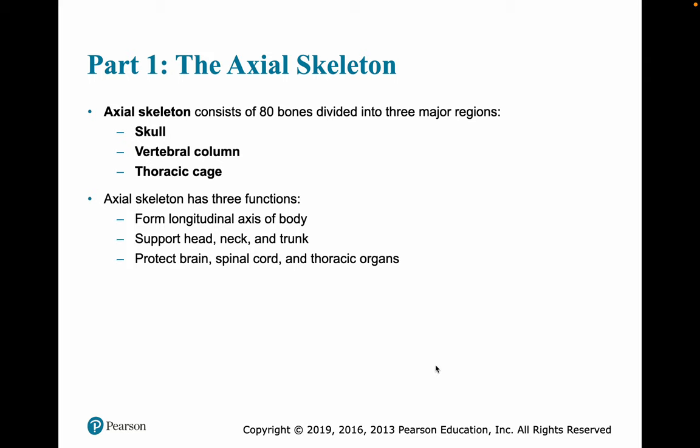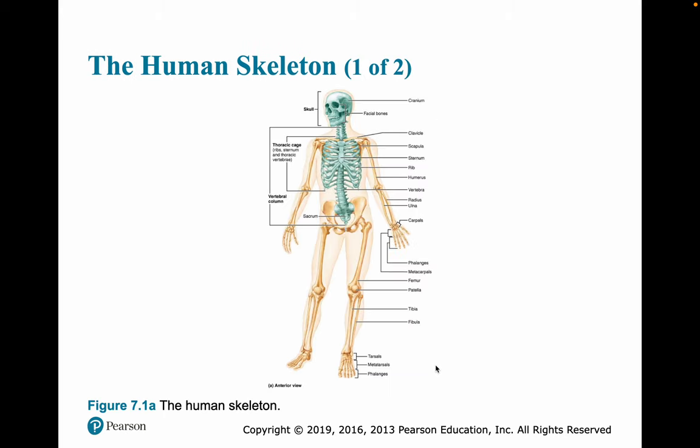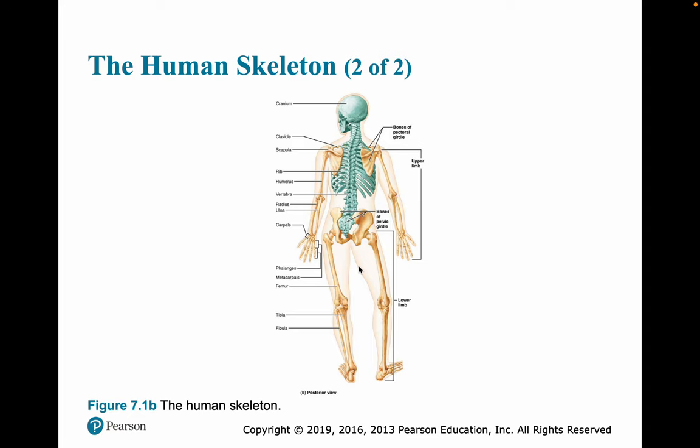In a typical axial skeleton, there are approximately 80 bones divided into three regions. We'll talk about the skull in this section, and the next will cover the vertebral column and the thoracic cage. The function of the axial skeleton is to form the longitudinal axis of the body. It helps to support the head, neck, and trunk, and is very important for protection — bones protect our brain, spinal cord, and thoracic organs such as the heart and lungs. Here, in green, we have the axial skeleton highlighted, with the appendicular skeleton in a brown color.